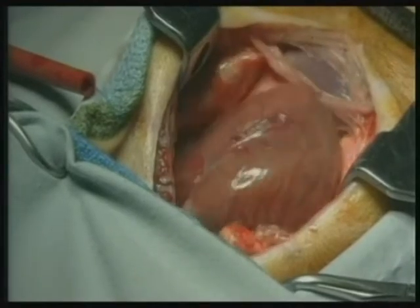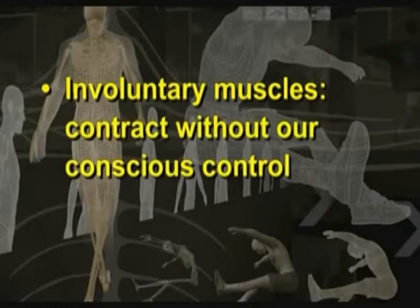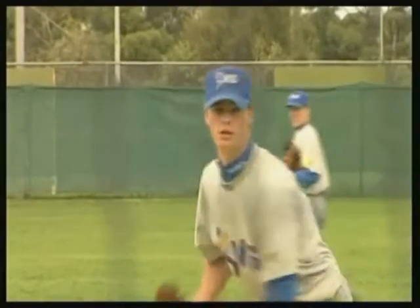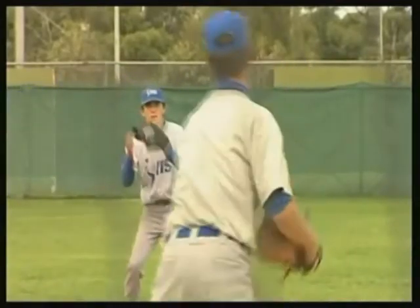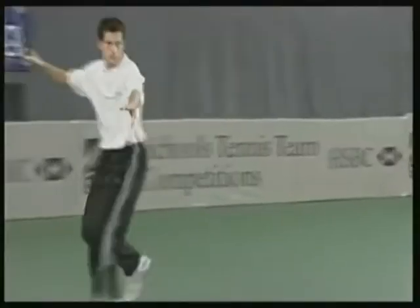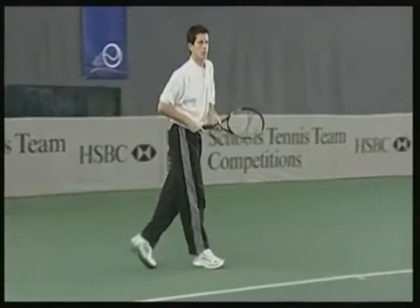Some muscles, such as the cardiac muscle, can be described as involuntary, meaning they contract outside of our conscious control. However, the majority of the muscles in the human body are classified as voluntary because we control them. These are the skeletal muscles that attach to bones and move the skeleton.